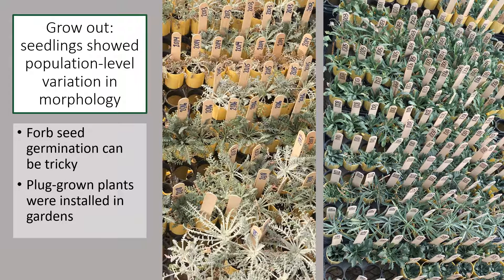In order to ensure that we would be able to measure plant performance in the field, the seeds were grown out at a greenhouse facility and planted as plugs into the gardens. Even at early life history stages observed in the greenhouse, it was apparent that there were morphological differences between plant populations. Here we're showing Machaeranthera canescens on the right and Conactus diglicei on the left, with each row representing a different population — you can see differences in the shape and color of leaves from plants coming from different populations.